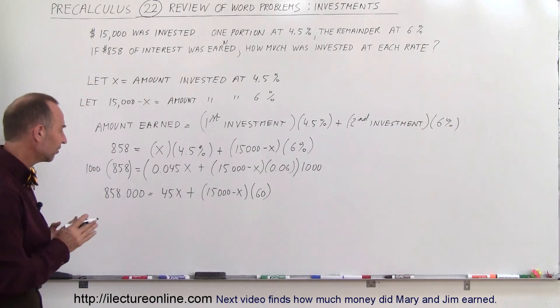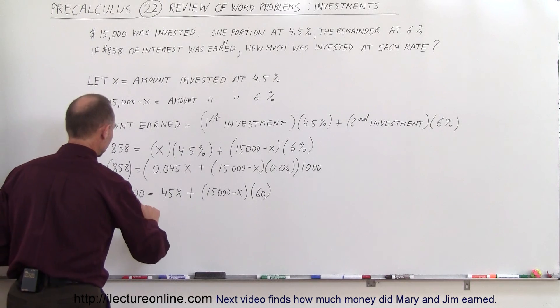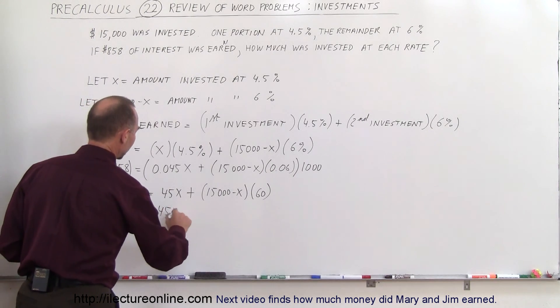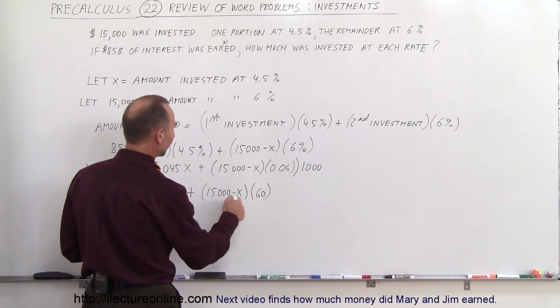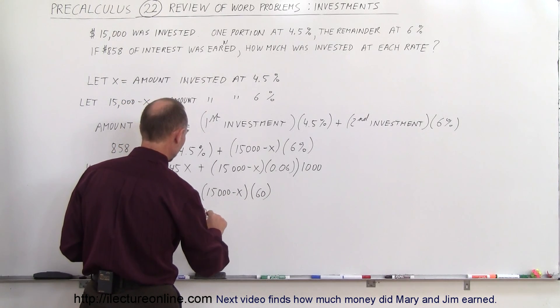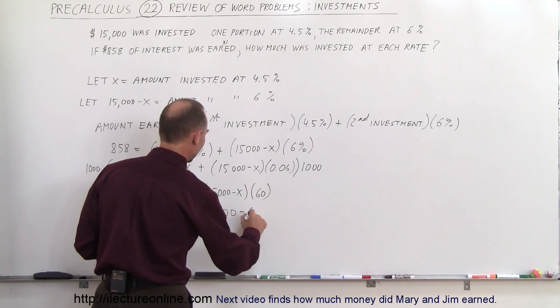Now we get rid of the parenthesis. So we have 858,000 equals 45x plus 60 times this. Well, 6 times 15 is 90 and 4 zeros. So 9, 0 and 4 more zeros, 1, 2, 3, 4, that's 900,000 minus 60x.